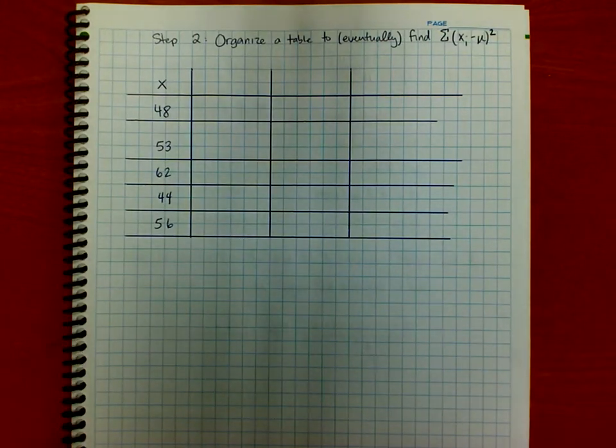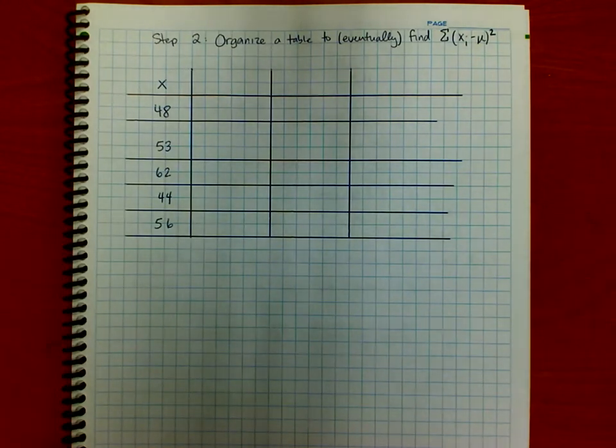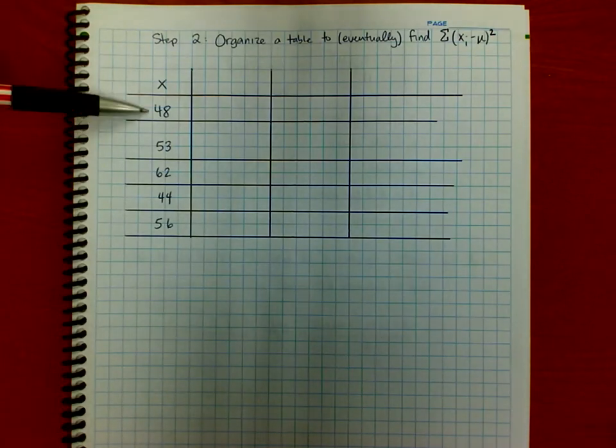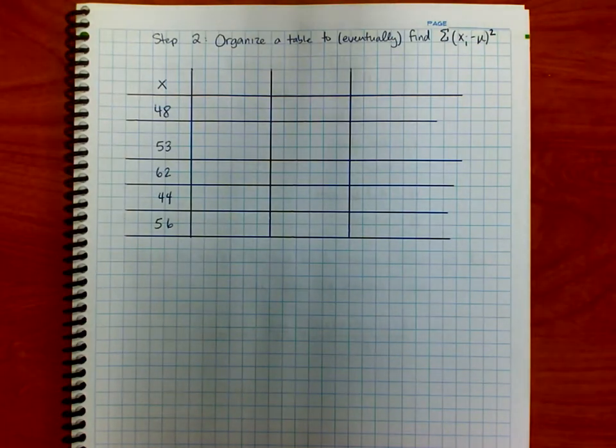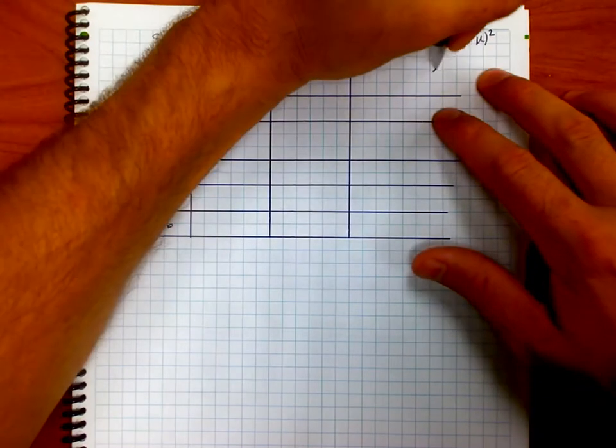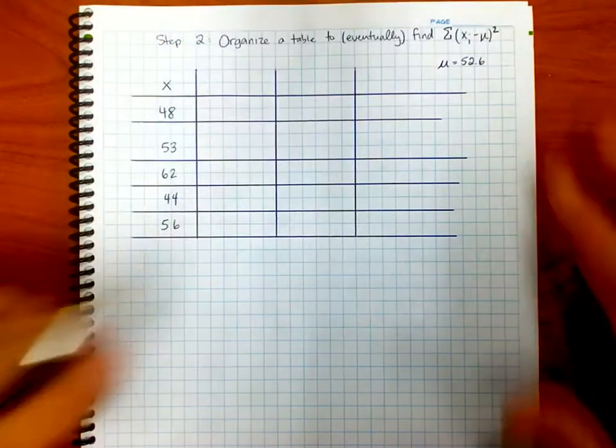Welcome back. In this video, we're going to finish off the problem that we started in the previous video, and that is to find the standard deviation of the data set that included 48, 53, 62, 44, and 56. What we followed up with, the last thing we did is we found the mean. So off to the side, I'm just going to record that again. The mean of our data set was 52.6.